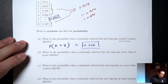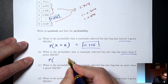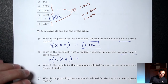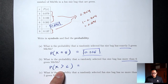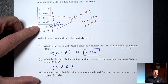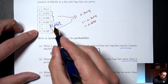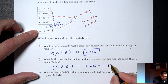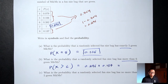Part B: What's the probability a bag has more than 6 green M&Ms? In symbols, X > 6. Greater than 6 does not include 6, so we're looking at x = 7 and x = 8. We add the probabilities: 0.296 plus 0.137 equals 0.433.